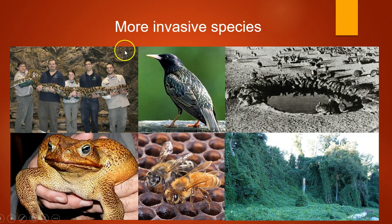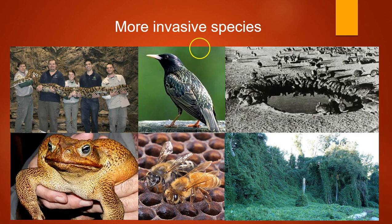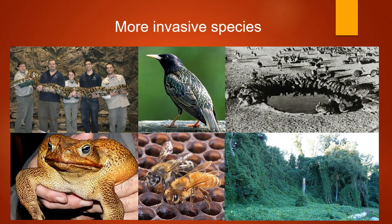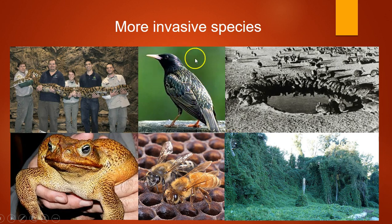The Burmese python in Florida is a very damaging invasive species — it eats many native animals and was generally introduced by people who no longer wanted them as pets. The European starling is another example: in the 1900s, someone had the idea to release all of Shakespeare's bird species in North America and released 100 starlings. Now you see them daily in large flocks. They're brood parasites that kick eggs out of native species' nests. Starlings are one of the few birds you can shoot without a hunting license under the Migratory Bird Act.